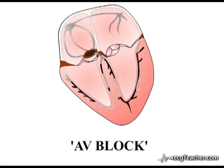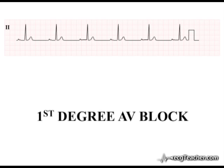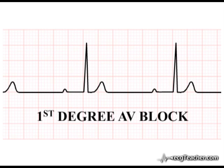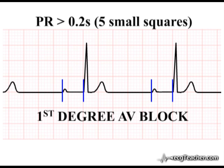Three degrees of AV block are recognised. In first degree AV block, all P-waves are transmitted to the ventricular muscle mass and therefore all are followed by a QRS complex. However, the time taken for conduction into the ventricular myocardium is prolonged. First degree AV block is defined by transmission of all P-waves to the ventricular myocardium but with prolongation of the PR interval beyond the upper limit of normal of 0.2 seconds on the ECG.